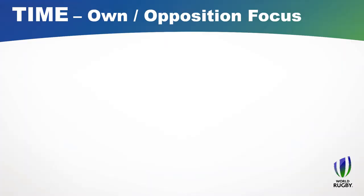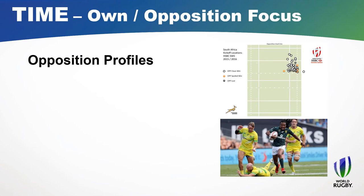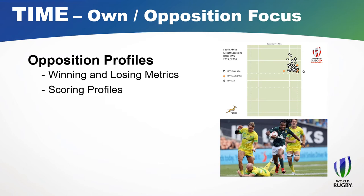Time is a limited resource for our analysis, so we need to decide how much to spend looking at ourselves versus the opposition. For us, we used to focus mostly on ourselves, but there were areas of the opposition we'd look at no matter who they were. The first was building a profile — especially around the restart, working out where they'd probably go and what we'd do to counteract that. We'd also look at what the team looks like when they're winning versus losing, and build up their scoring profile.